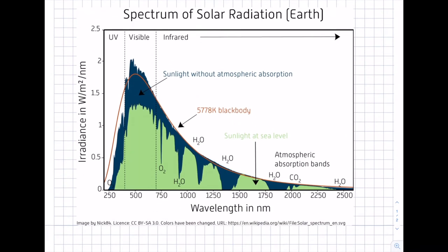Looking at the spectral diagram: the orange curve is the blackbody emission of a perfect blackbody in thermal equilibrium; the blue curve is the sunlight spectrum without any absorption (AM0); and the green curve is the spectrum of sunlight at sea level (AM1). You can see the intensity has dropped, with absorption bands from water vapor, oxygen, ozone, and carbon dioxide at higher wavelengths.